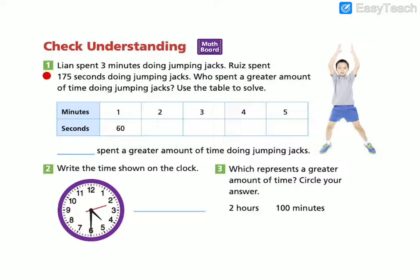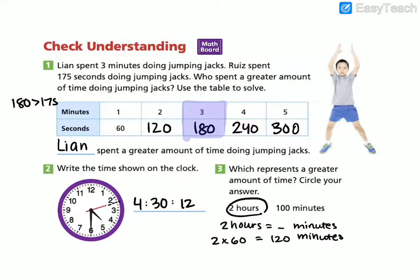Let's go ahead and take a look at the check understanding. You're going to press pause and then press play to check your work. Let's go ahead and check your work. So you use this table to find how many seconds Leon spent doing jumping jacks. We find that three minutes is equal to 180 seconds. 180 is greater than 175, so Leon spends a greater amount of time doing jumping jacks.